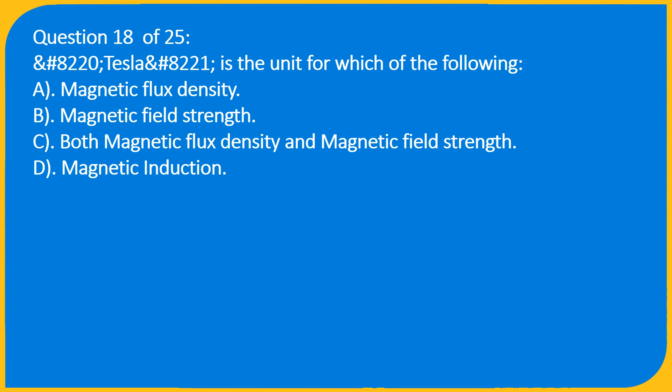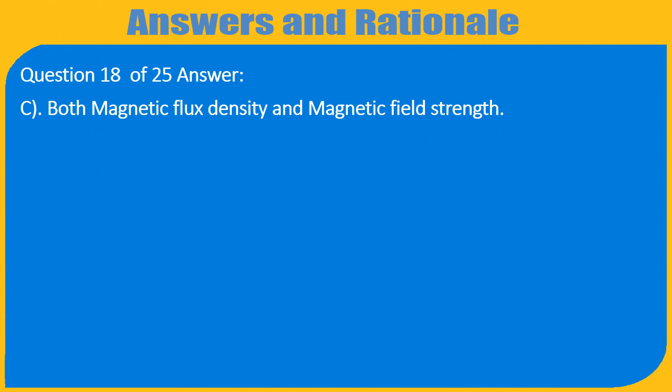Question 18 of 25: "Tesla" is the unit for which of the following? A. Magnetic flux density, B. Magnetic field strength, C. Both magnetic flux density and magnetic field strength, D. Magnetic induction. Answer: C. Both magnetic flux density and magnetic field strength.